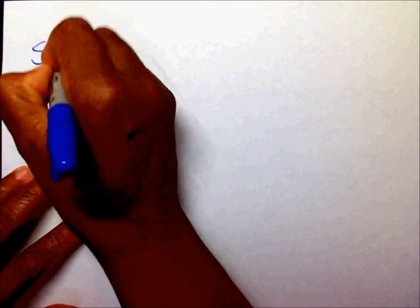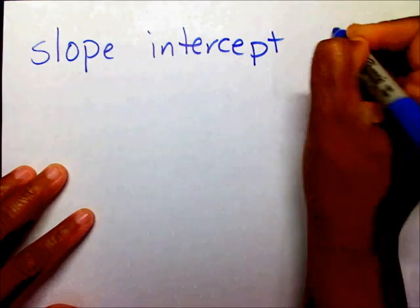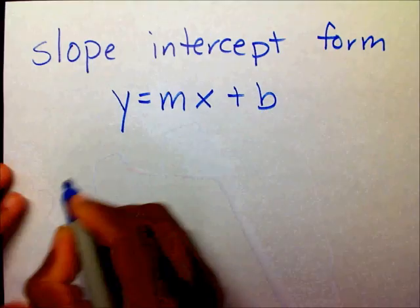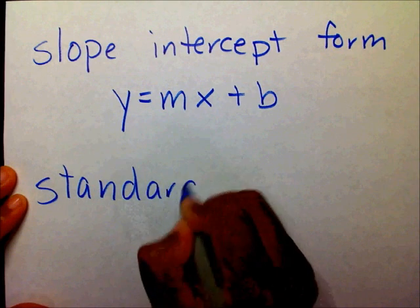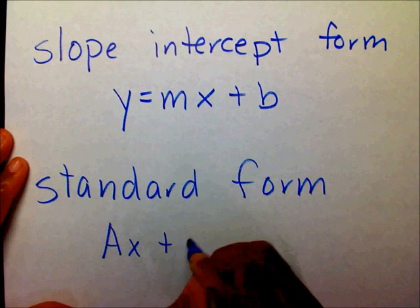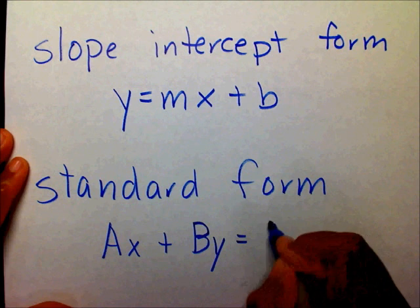Just as a review, there are two different types of equations that you deal with when finding slope. You have the slope-intercept form, which is y equals mx plus b, and the standard form, which is ax plus by equals c.